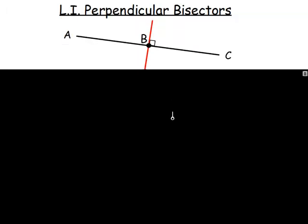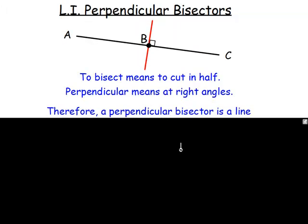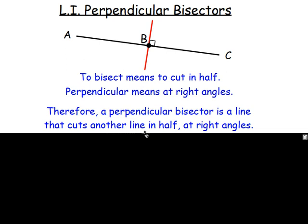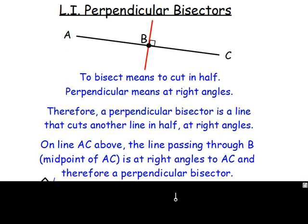To bisect means to cut something into two equal parts. So a perpendicular bisector then is really just a line that cuts another line in half at right angles. So bisect means cut in half. Perpendicular means at right angles. So this red line here is cutting the line AC in half at right angles, as it says just here.